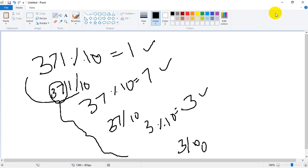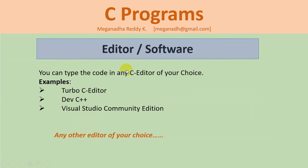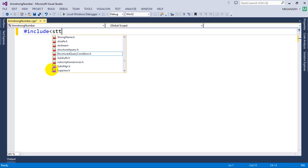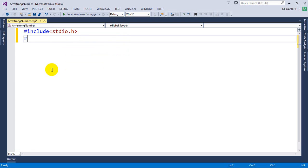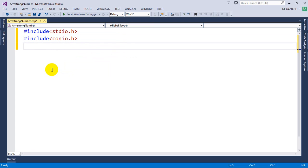Now let's get started with coding. You can use an editor of your choice — Turbo C, Dev C++, Visual Studio Community Edition, or any editor with a C compiler. I'm going to use Visual Studio Community Edition. First, include stdio.h and conio.h.